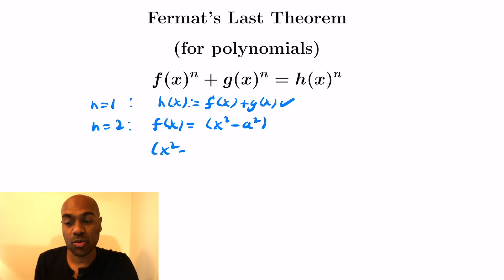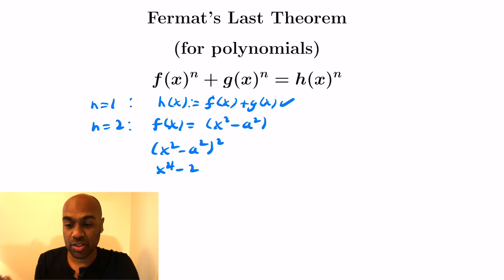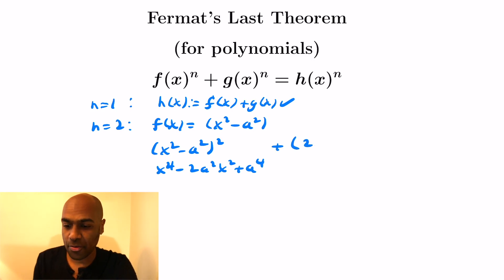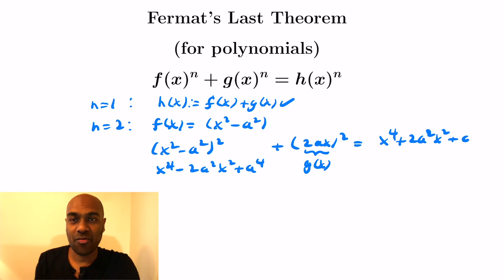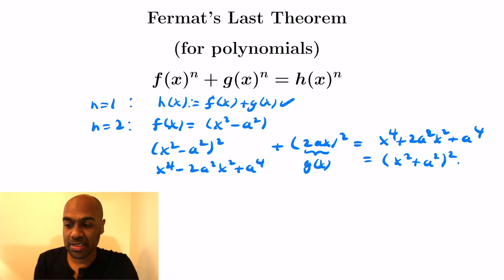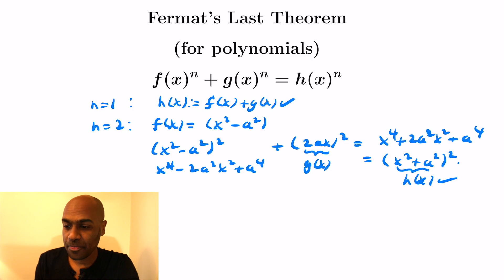Set f(x) = x² − a². Then f² = (x² − a²)² = x⁴ − 2a²x² + a⁴. If we add (2ax)², that negative 2a²x² term becomes positive, so setting g(x) = 2ax gives f² + g² = x⁴ + 2a²x² + a⁴ = (x² + a²)². Setting h(x) = x² + a² gives us that solution — we have families of solutions when n=2.